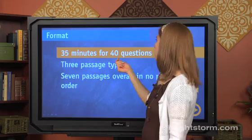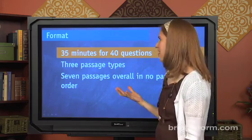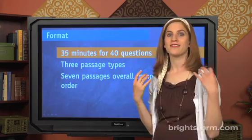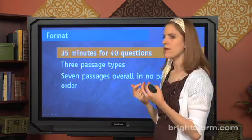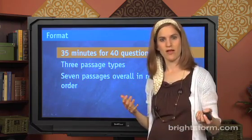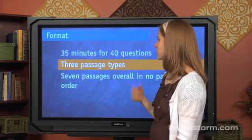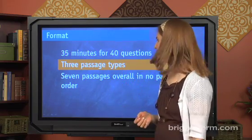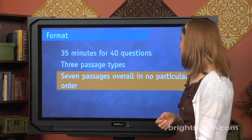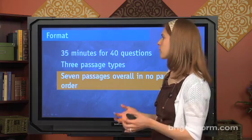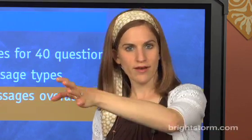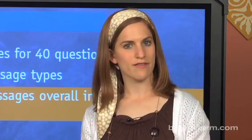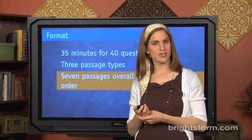Format: thirty-five minutes for forty questions. That's a lot to do and not a lot of time. You've got thirty-five minutes for forty questions, and remember the seven passages that go along with those. There are three passage types, and seven passages overall in no particular order. You'll have three of one type, three of another type, and one of a third type, for a total of seven passages.